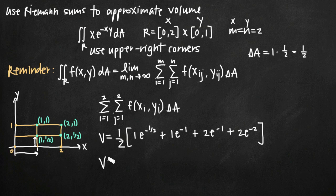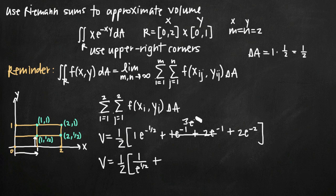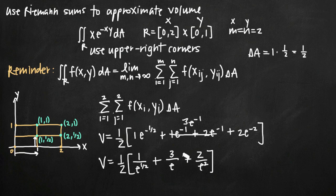Now it's just a matter of simplifying. Volume equals 1/2 times the bracket. Moving exponents to the denominator flips the sign, so e to the negative 1/2 becomes 1 over e to the 1/2. Notice we have 1·e to the negative 1 plus 2·e to the negative 1, which combine to give 3·e to the negative 1, or 3 over e. Then we add 2 over e squared. Finding a common denominator of e squared, we get (e times 3 plus root e plus 2) all over 2e squared.